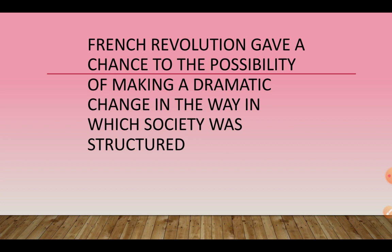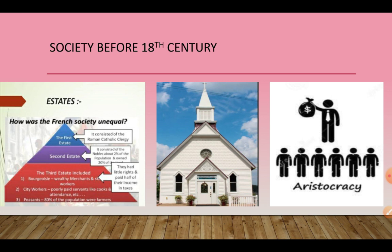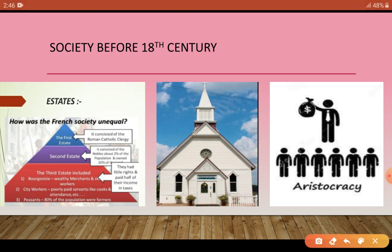As you know, before the 18th century, society was divided into three estates. The first estate was the clergy, the second estate was the aristocracy, and in the third estate were the bureaucracy, city workers, and peasants. The majority of the population was in the third estate, yet social and economic power was controlled by the churches and aristocracy.